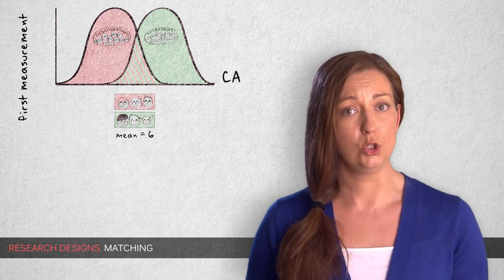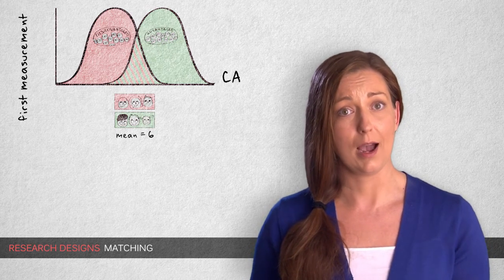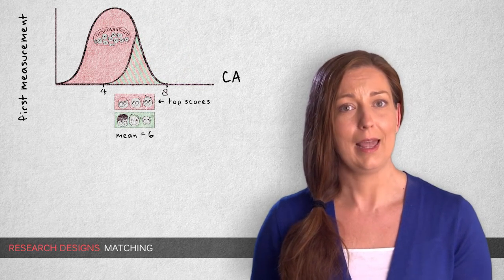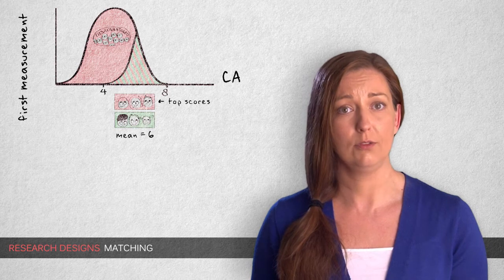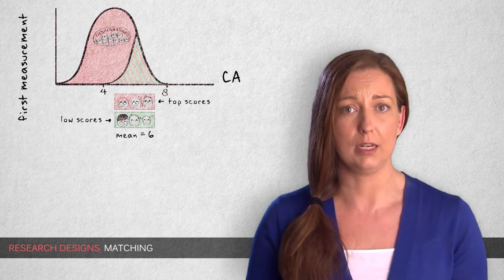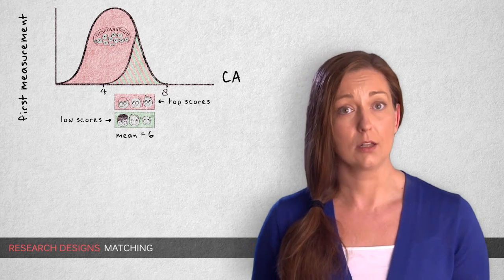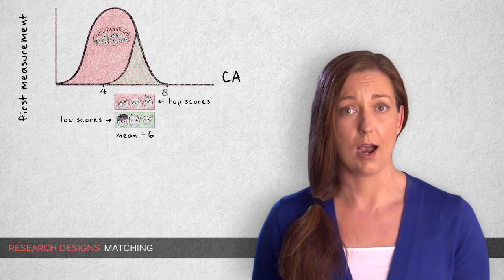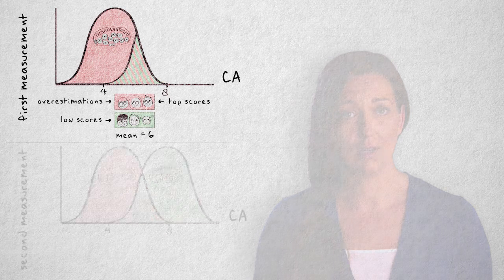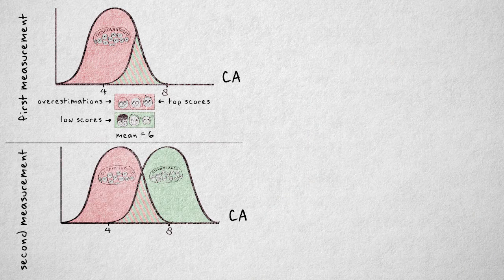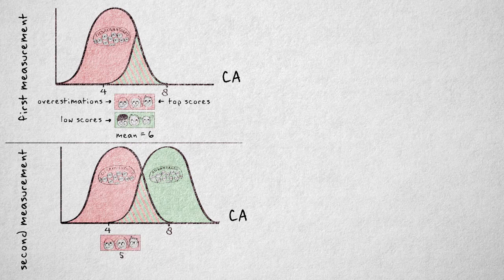Well, that means we choose disadvantaged toddlers with relatively high scores, relative to the mean score of their group, and advantaged children with relatively low scores, relative to the mean score of their group. Now, in the disadvantaged selection, it's likely that at least some of these relatively high scores are overestimations, and a second measurement will be closer to the mean of the disadvantaged children, resulting in a lower mean score for this group.